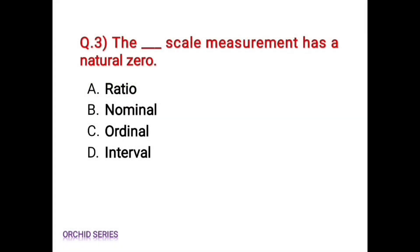Question 3: which scale measurement has a natural zero? The options are: Option A, ratio. Option B, nominal. Option C, ordinal. Option D, interval.